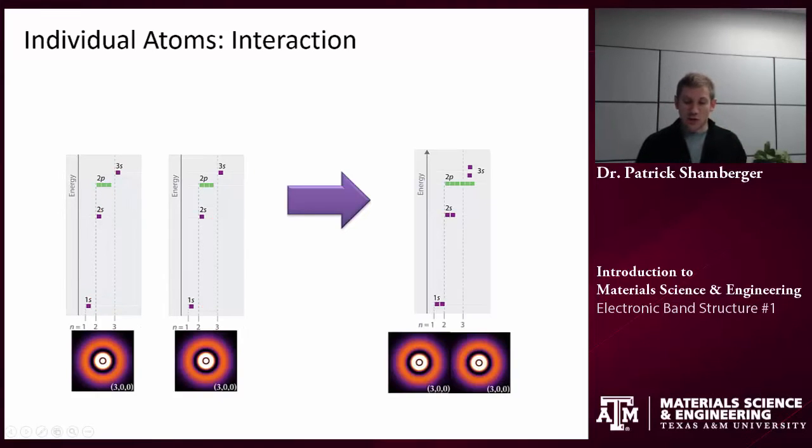Now as they start to get closer and closer together, those wave functions will interact. And you see what happens. The 3s orbital starts to split into two different energy levels. And this is what I mean by the constructive. Constructive would be down here, and the destructive, higher energy level orbitals.